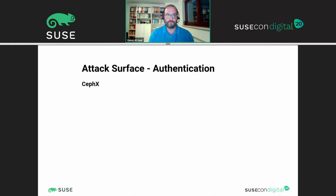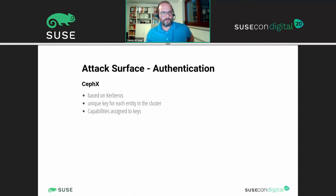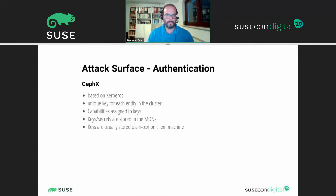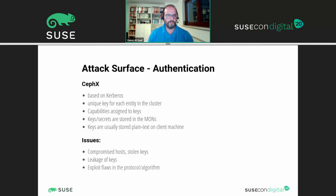Taking a deeper look at CephX: it's a Kerberos-based protocol with unique keys for each entity in the cluster — each daemon and each client. It has capabilities assigned to the keys, and the keys are stored in the MONs. They are usually stored in plain text on the client machine, which could be an issue. You could have compromised hosts, stolen keys, key leakage due to debug messages, exploits and flaws in the protocol, and very often it's an issue that you have to use overly wide capabilities for a certain user.